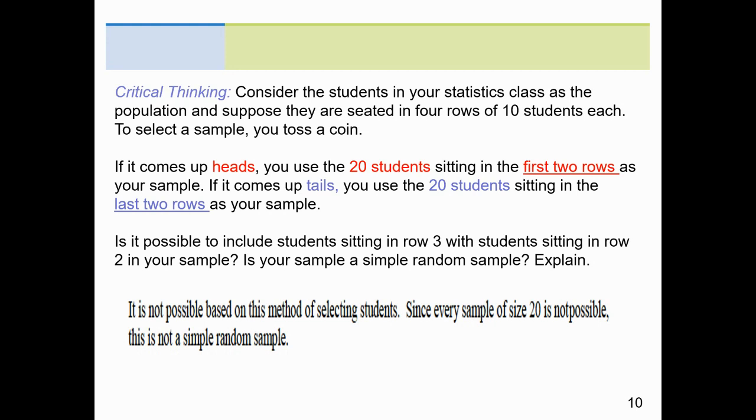Is it possible to include students sitting in row three with students sitting in row two? Well, no, because it's heads. I'm picking the first and second row. Tails, I'm picking the third and the fourth. I can't combine the second row with the third row, all right? Since now every sample size of 20 is not possible, all right? I can't get people in the first and in the fourth row. So every group of 20 doesn't have the same probability or chance of being selected. It's either first and second or third and fourth. No other combination of 20. So this is an example of not being a simple random.